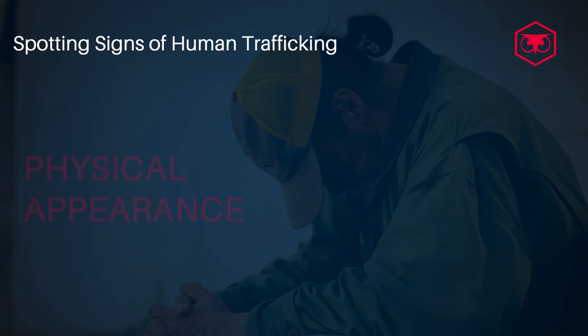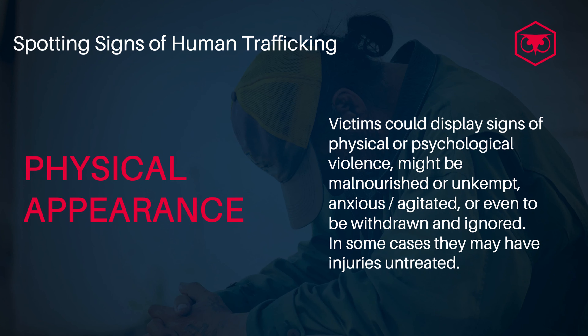The first sign is one of the most obvious — it's about the physical appearance of victims of human trafficking and modern slavery. They usually could display signs of physical or physiological violence. They tend to be malnourished or unkempt. In terms of their behavior, they will show signs of anxiety and are generally very agitated, or even with a withdrawal attitude and a feeling of being ignored. In some cases they may also show untreated injuries.